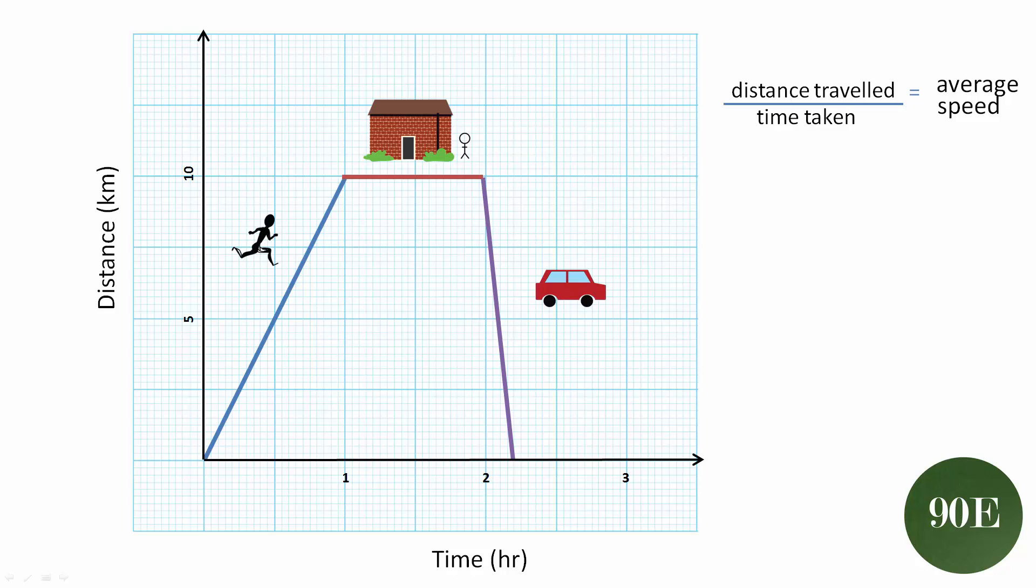To consolidate our understanding, let's just do a couple of calculations to work out what speed they traveled to their friend's house and what speed they returned back. To calculate the speed for the first journey, we need to look at the distance that was traveled, so the change in the y-axis, which is 10 kilometers, and the change in time, which is one hour. So 10 kilometers divided by one hour is 10 kilometers per hour.